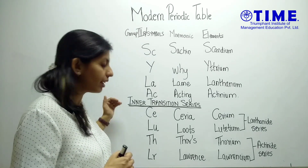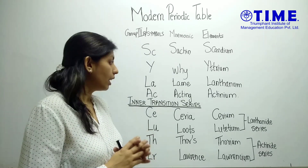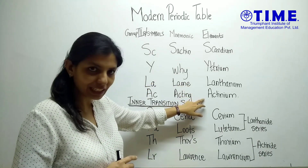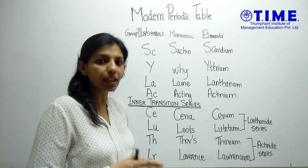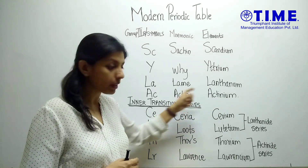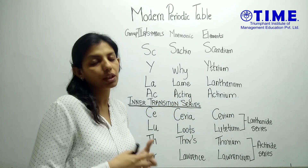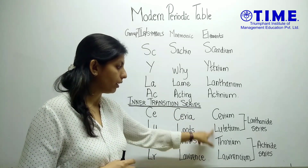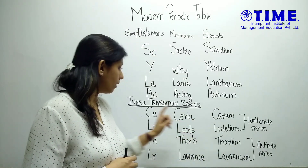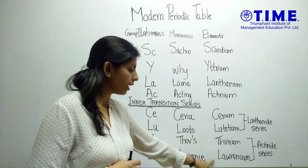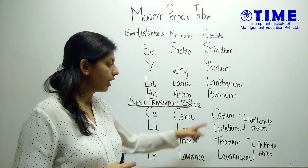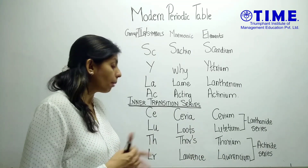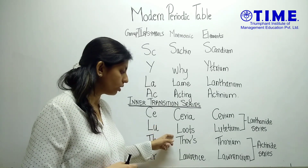Now let's look at the starting and end points of the inner transition series. In Group 3B, the 5th and 6th periods have lanthanum and actinium, after which a series of 14 elements features in each — that is the inner transition series. The four key elements are: cerium (start of lanthanide series), lutetium (end of lanthanide series), thorium (start of actinide series) and lawrencium (end of actinide series). The mnemonic goes: 'Ceria, Lute, Thor, Lorenz' — all Avengers fans should definitely remember this one!